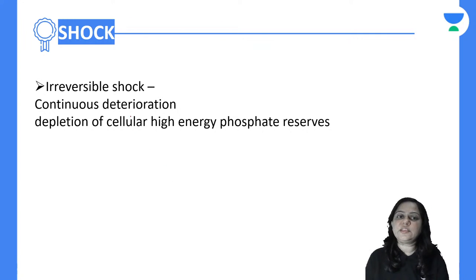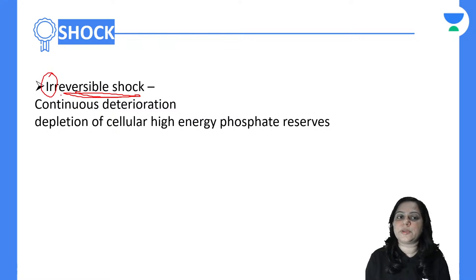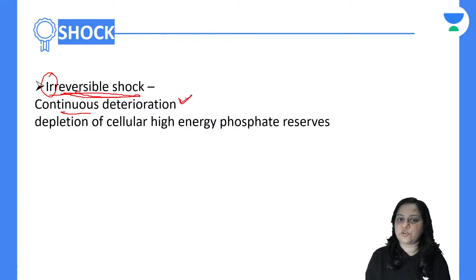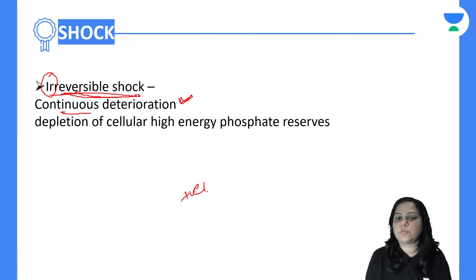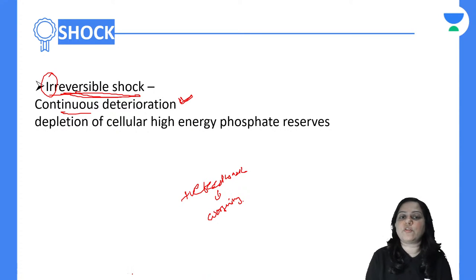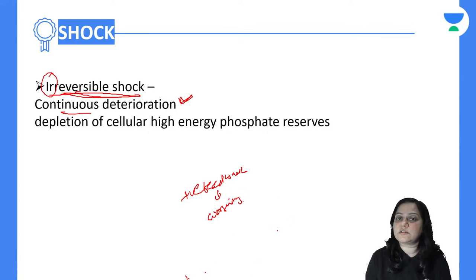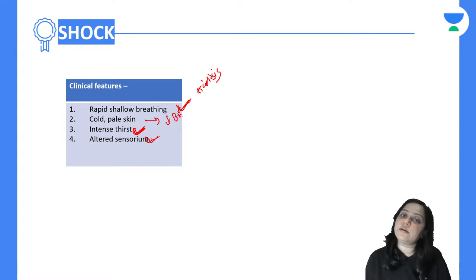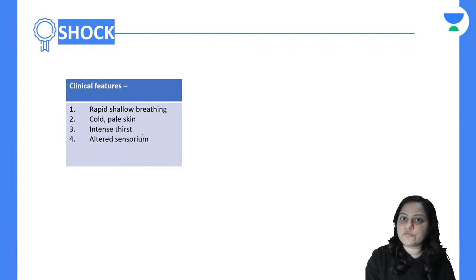If the positive feedback mechanism of progressive shock keeps occurring, the person enters irreversible shock. In irreversible shock, there is continuous deterioration — the entire mechanisms causing progression are now in a positive feedback loop, continuously worsening the situation. There will also be depletion of cellular high energy phosphate reserves. Decreased blood flow to the brain causes altered sensorium — these are the clinical features of shock.